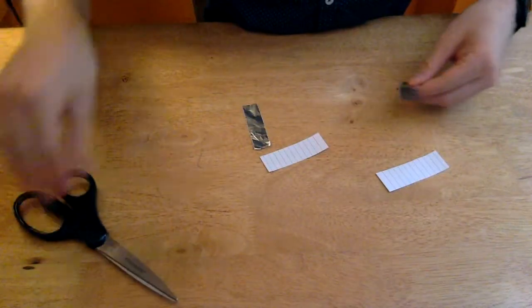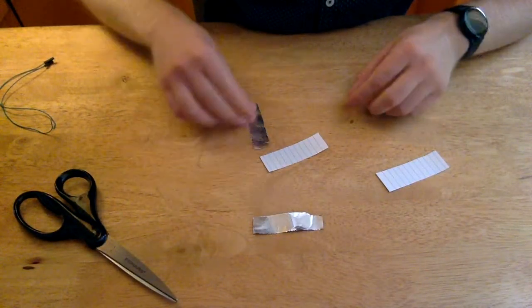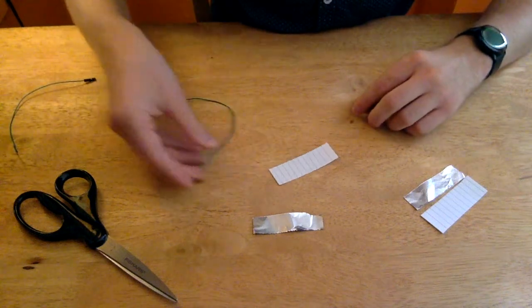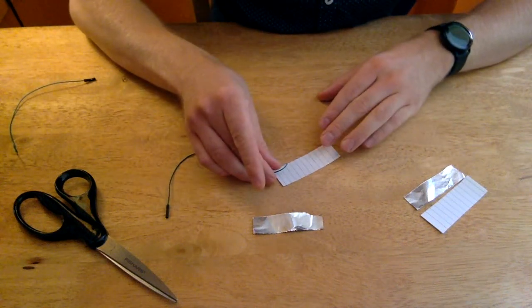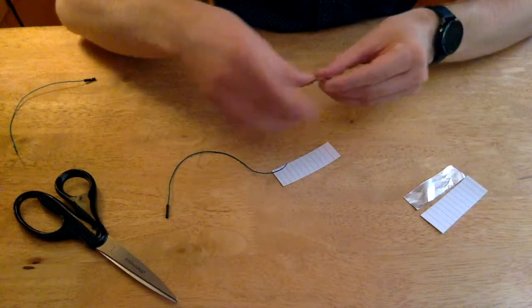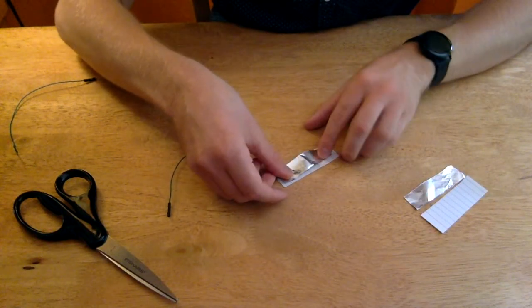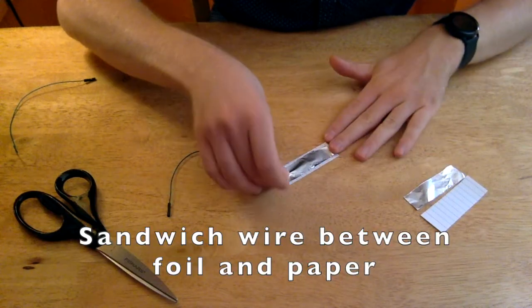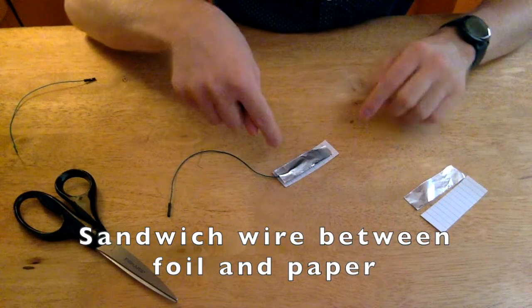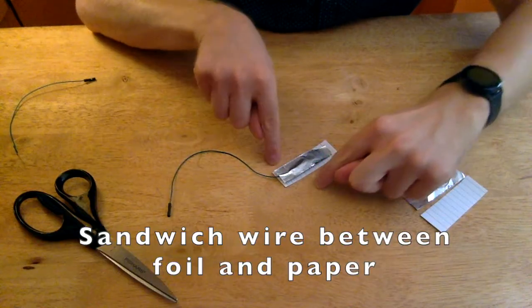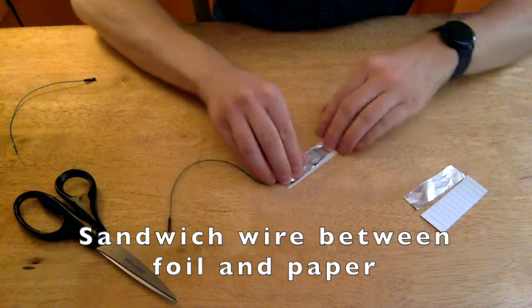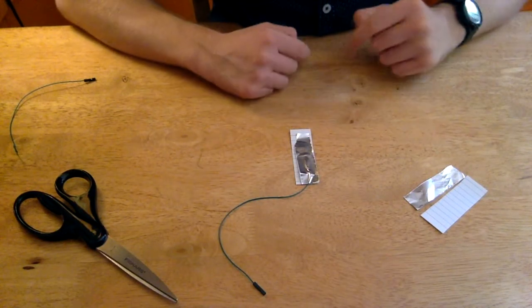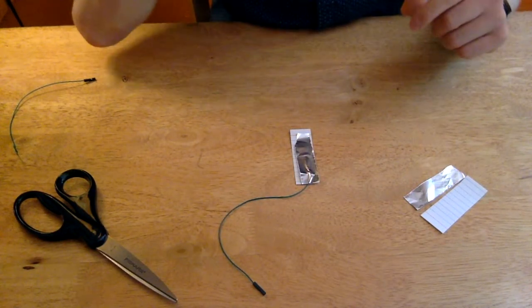Now what we'll do—we're going to do this same thing for both strips of paper—we're going to place the wire on them, put the aluminum foil on top of the wire, and then we're going to put a layer of tape down to secure it. On these two edges of the paper, you should be able to see there's a little bit of paper on either side of the aluminum foil. That's what we're going to stick the tape to.